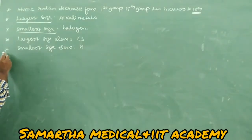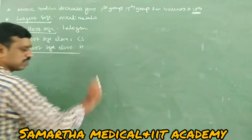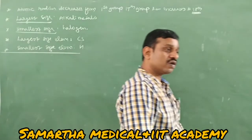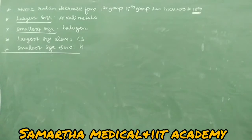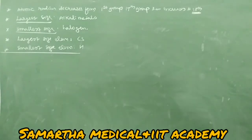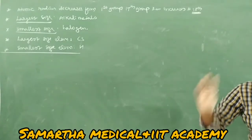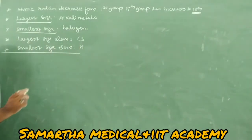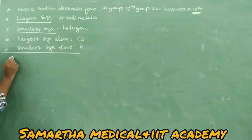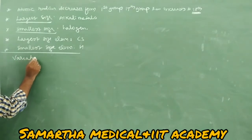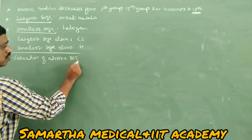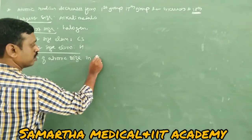Now we also have variation of atomic size in d-block and f-block elements — they are almost the same. We will study d-block and f-block elements in detail. Next: variation of atomic size in d-block elements.